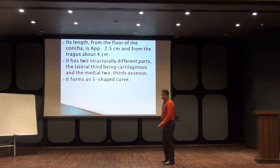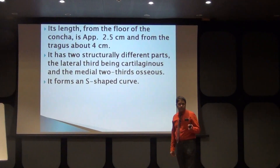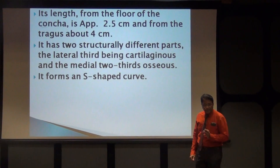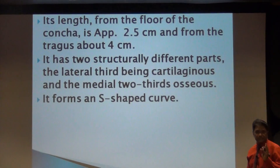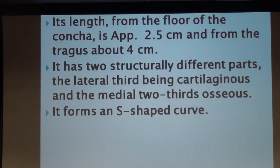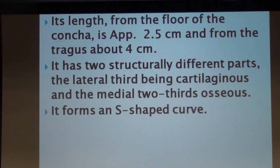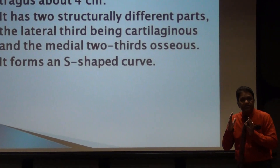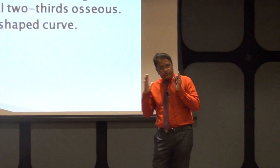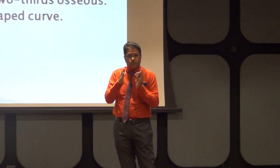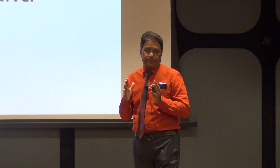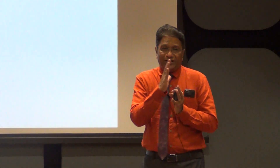The total length of the external acoustic meatus is 24 mm or 2.4 cm. We use 24 mm because it is easy to divide the canal into two parts: the lateral one-third is the cartilaginous part, which is 8 mm, and the medial two-thirds is the osseous part, which is 16 mm.